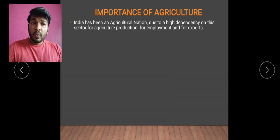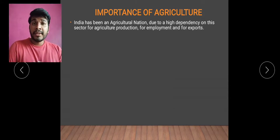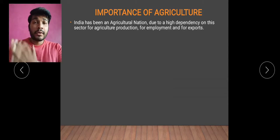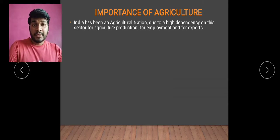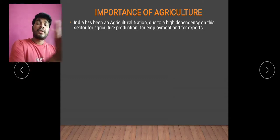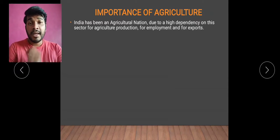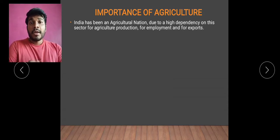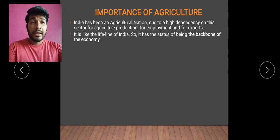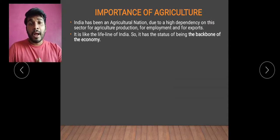Why are we dependent? What are the reasons? Because fruits, vegetables, flowers, and different cash crops and food grains are being produced, and these agriculture products are used in the industrial sector as raw materials. The industrial sector works on these, and then comes the service sector. So ultimately, this agriculture sector is the most important sector for our country and it is also known as the backbone of the nation or backbone of the economy.